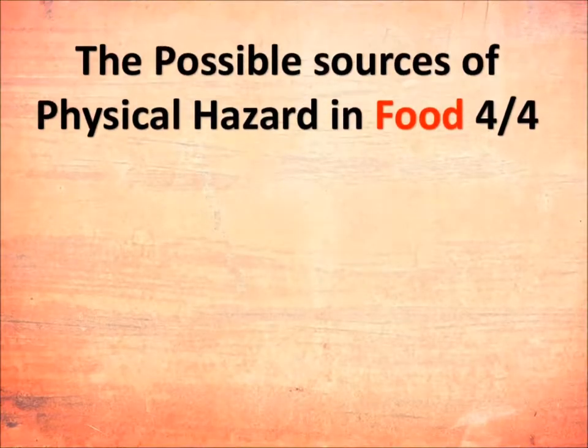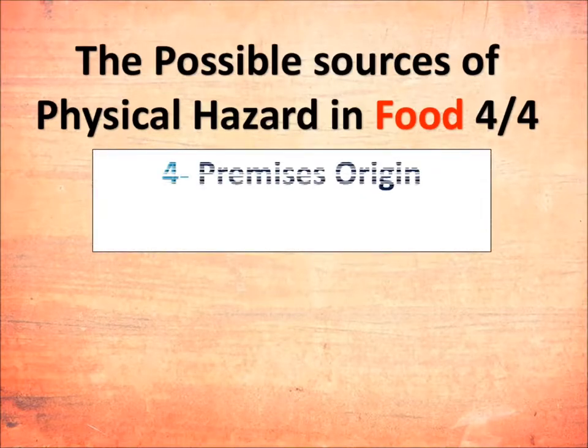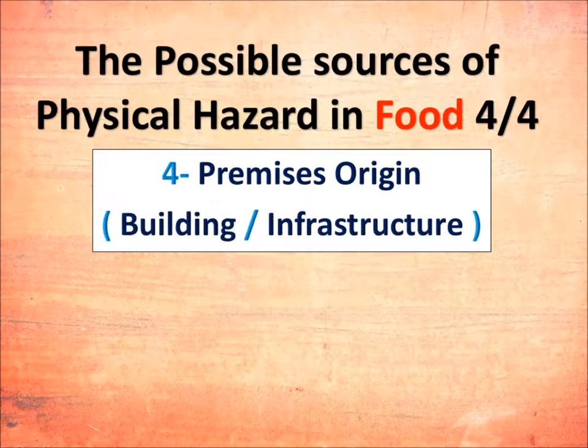Hello everybody, again on Simply For the YouTube channel. Today we will continue the possible sources of physical hazard in food — the last part, which is 4 of 4: the premises origin, like the building or infrastructure. Today we will talk about the ceiling, the walls, and the floors.